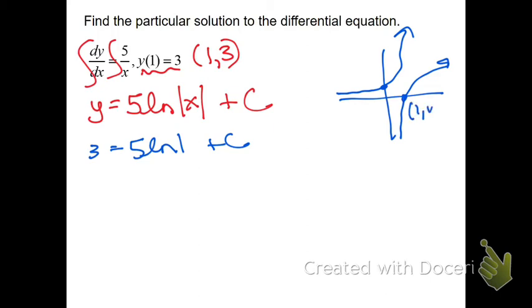So this is 1, 0. What does that tell you? The natural log of 1 is 0. So right here, the natural log of 1 is 0. And that means that c had to be 3.